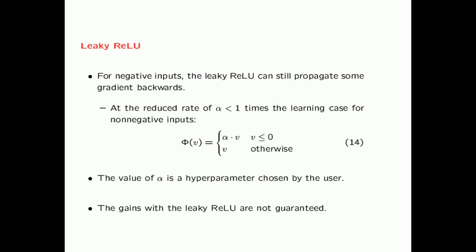There are certain fixes to this type of problem, one of which is called the leaky ReLU. In the standard ReLU, you set the activation function value to zero when the argument is negative. In the leaky ReLU, you set it to αV instead, so you still allow some propagation of gradient backwards but at a reduced rate. This value of alpha is less than one — it is a hyperparameter chosen by the user, but of course you can also learn it. The gains with the leaky ReLU are not guaranteed.